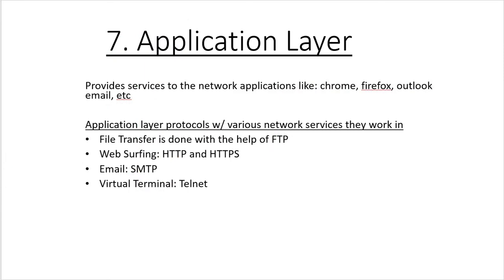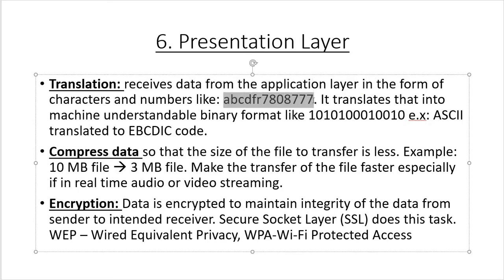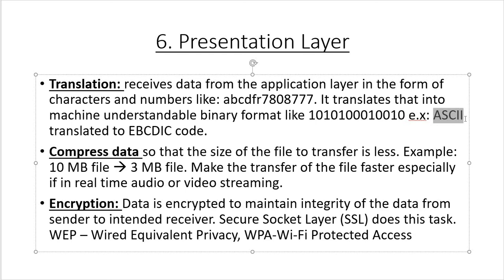Once the Application layer is finished, it passes the data down to the Presentation layer. The Presentation layer receives data in character and number format — text and numbers — and translates that into binary format of ones and zeros, which is what the computer understands. For example, it detects ASCII and translates that into EBCDIC code.